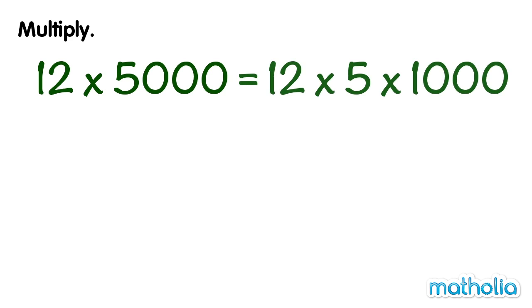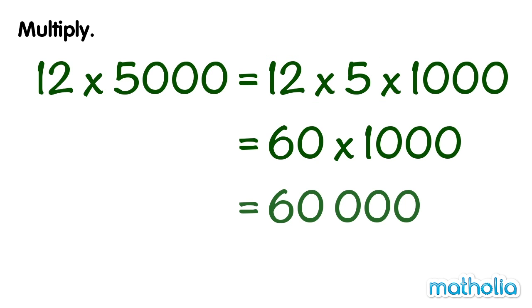So 12 times 5,000 equals 12 times 5 times 1,000. 12 times 5 is equal to 60. 60 times 1,000 equals 60,000.